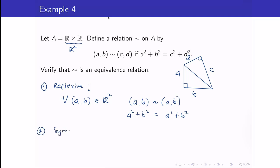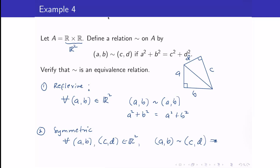Now let's check for the symmetric property. For symmetric, we take two elements — two ordered pairs (A, B) and (C, D) in ℝ². If (A, B) is related to (C, D), is it true that (C, D) is related to (A, B)? Yes, because if A² + B² equals C² + D², then it is true that C² + D² equals A² + B². This follows from the fact that the equality relation is symmetric. The reflexive property also holds because the equality relation is reflexive.